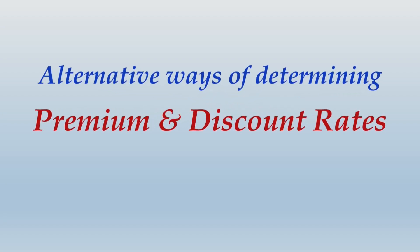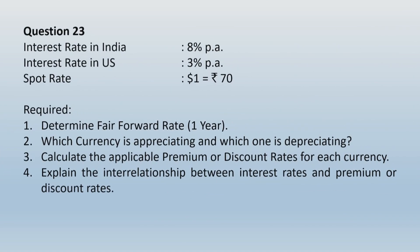We are looking at alternative ways of determining premium and discount rates. Let us take up question number 23. It says interest rate in India is 8% per annum, interest rate in US is 3% per annum, spot rate is $1 equals ₹70. Required: determine fair forward rate for 1 year; which currency is appreciating and which is depreciating; calculate the applicable premium or discount rate for each currency; and explain the interrelationship between interest rates and premium or discount rates.